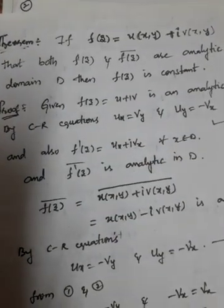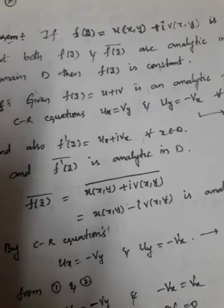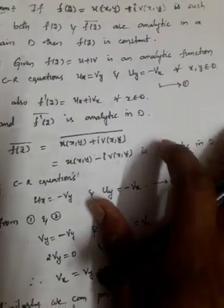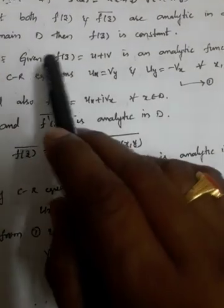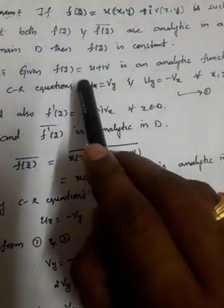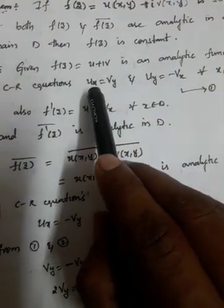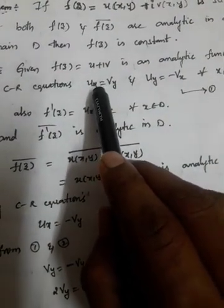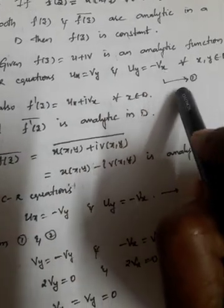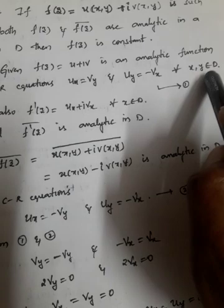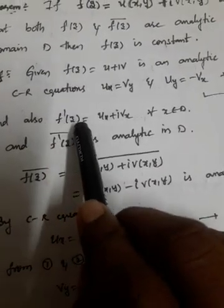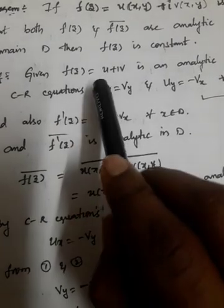By taking f(z) = u + iv as an analytic function, we will try to prove that f(z) is constant. Whenever a function is analytic it satisfies the Cauchy-Riemann equations: u_x = v_y and u_y = -v_x. We take this as equation number one, for all (x, y) belonging to D.